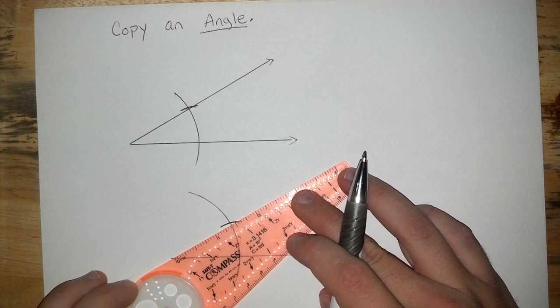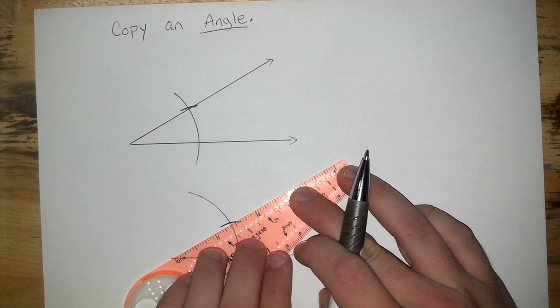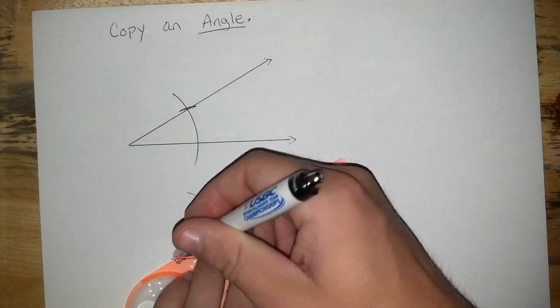So go ahead and do that. Connect the vertex with the point where our two arcs intersected.